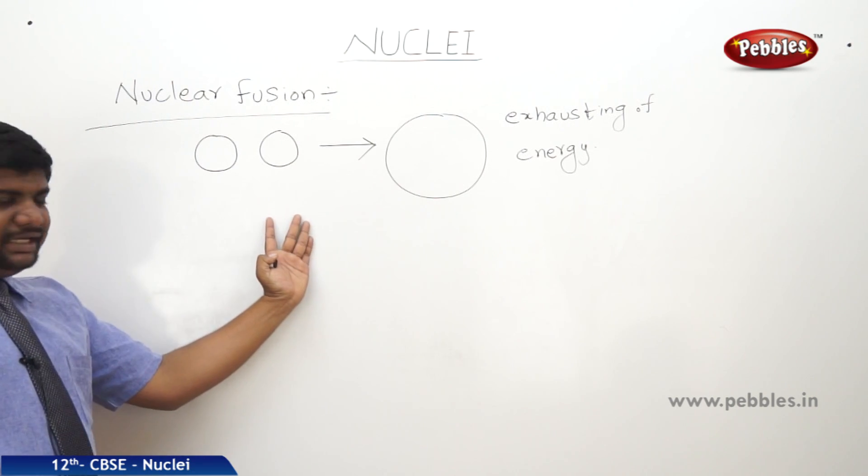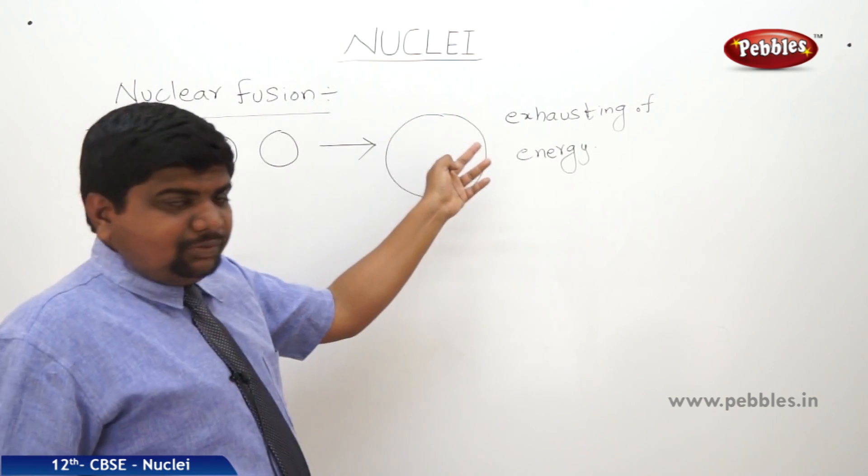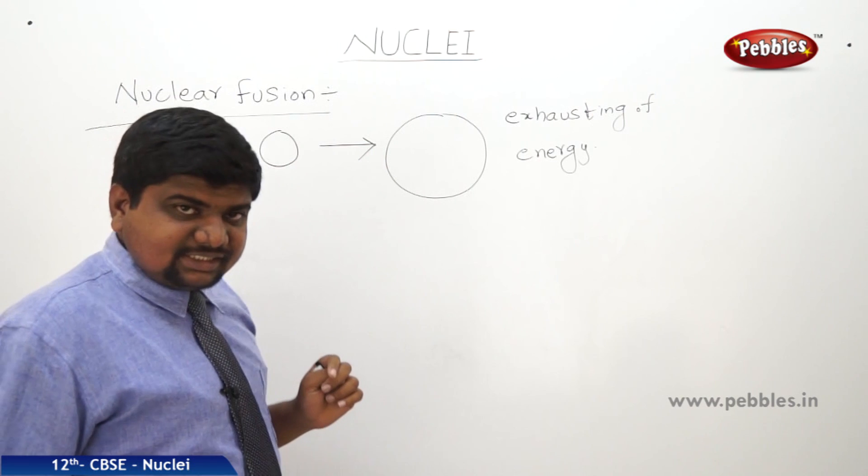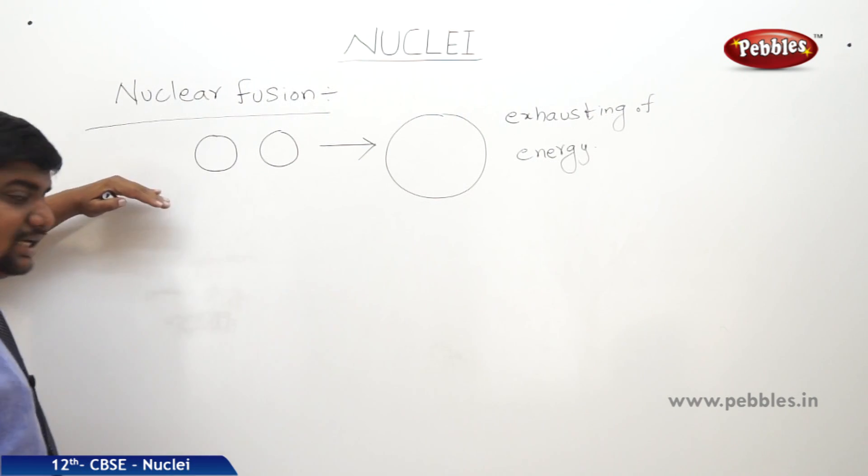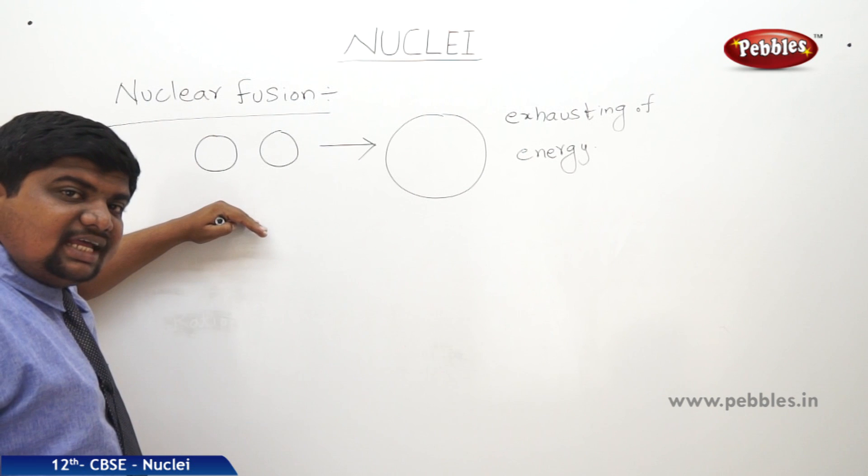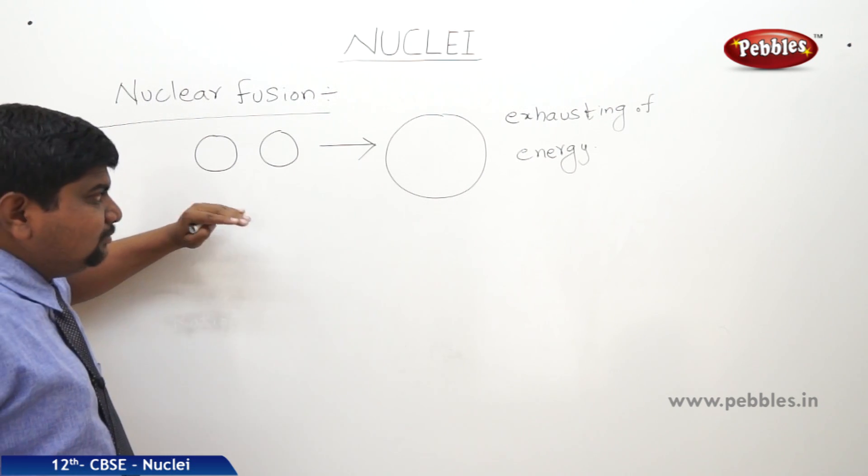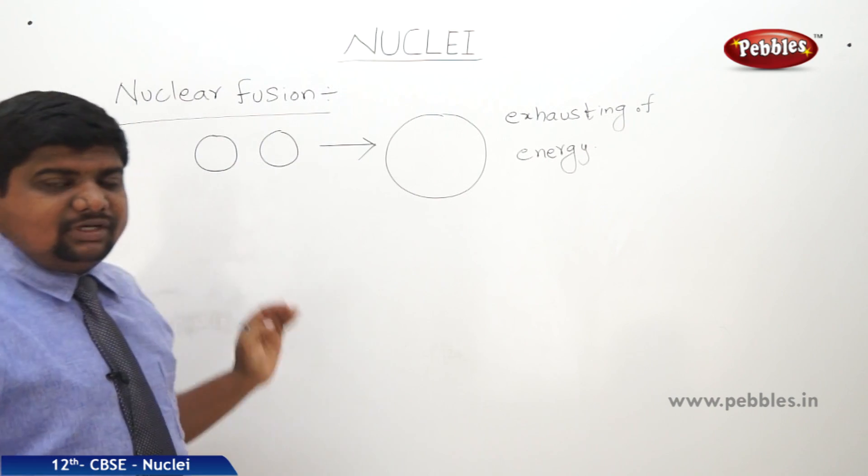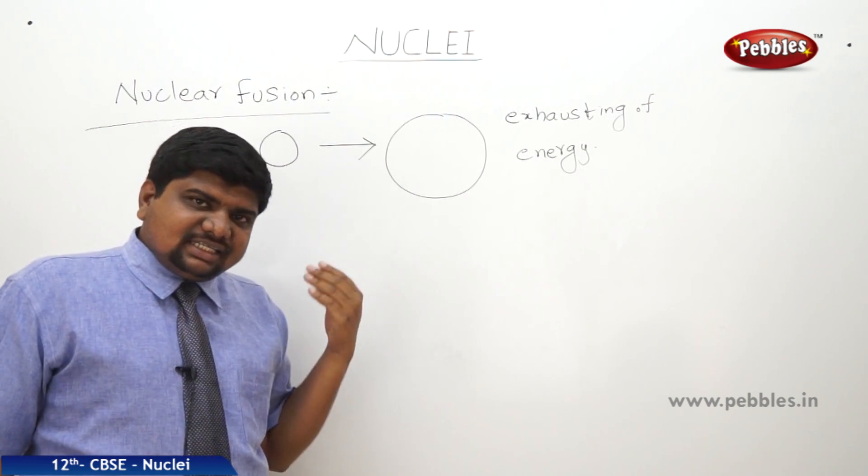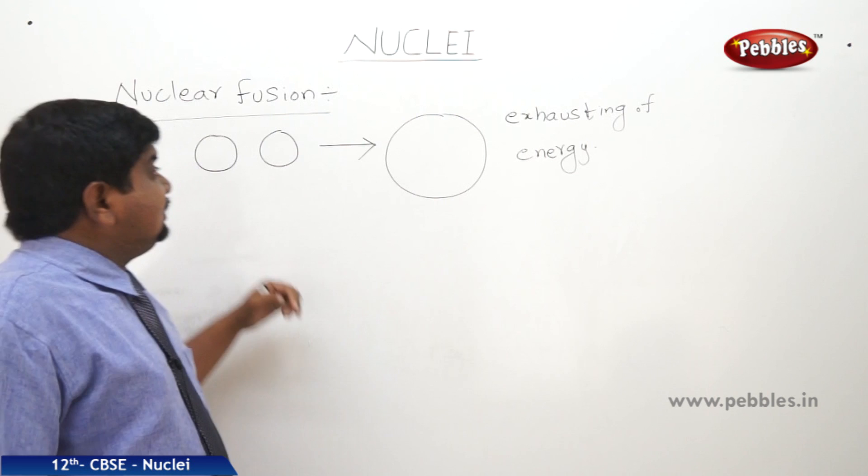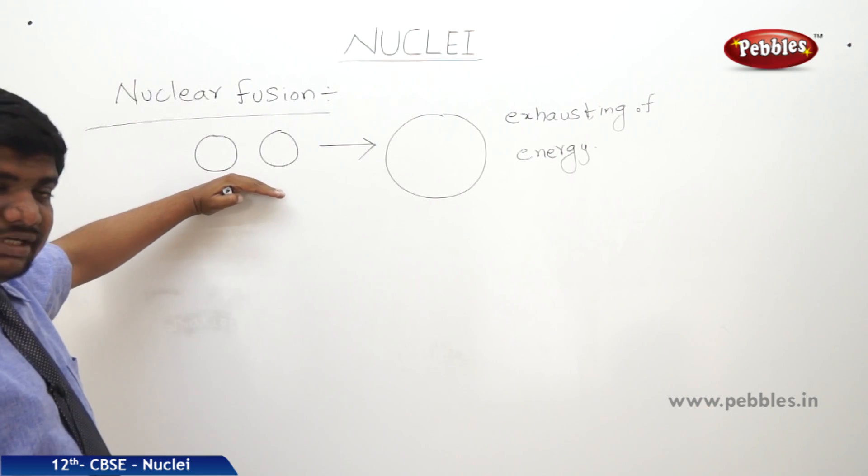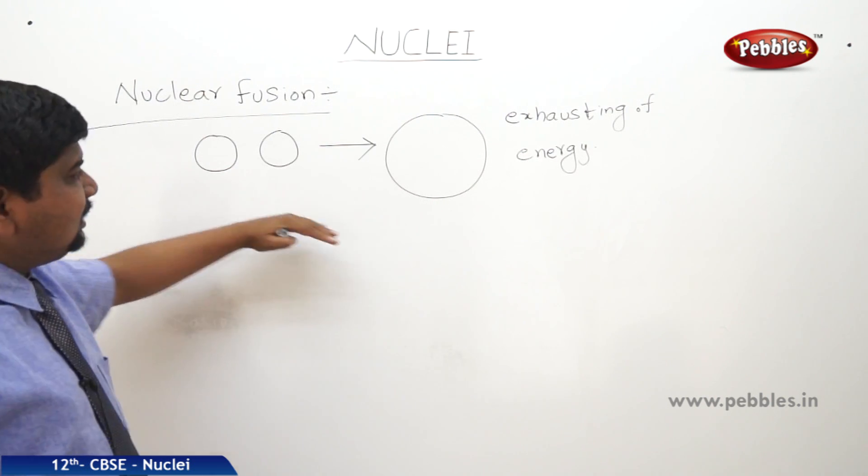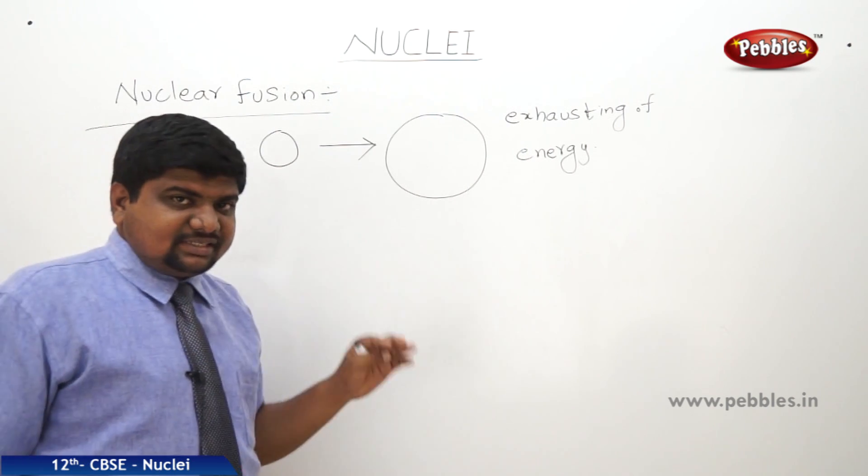Two small nuclei combined to form a big nucleus is called nuclear fusion reactions. These nuclear fusion reactions are taking place inside the stars, sun and many solar system particles. Because of the fusion reaction only, much amount of energy is released. But there are some difficulties to understand these fusion reactions.